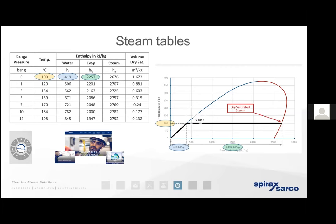The term 'dry saturated steam' — the saturated part means the steam is saturated with energy; it physically cannot contain any more. The maximum energy steam can contain at zero bar gauge is 2,676 kilojoules. But the term 'dry' is critically important. If we're distributing wet steam leaving the boiler through hundreds of metres of steel pipework, more and more of that steam will condense out, giving up energy to the pipework — a significant heat loss representing significant inefficiency.